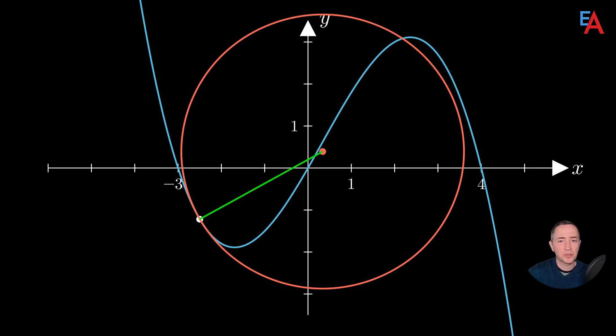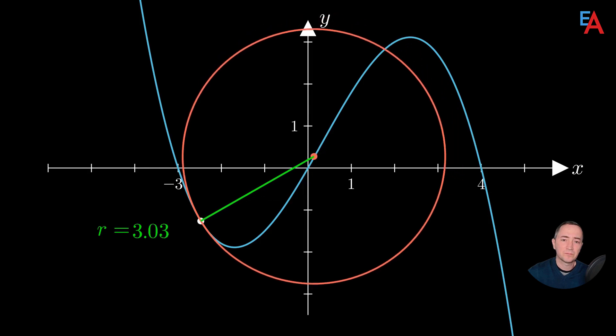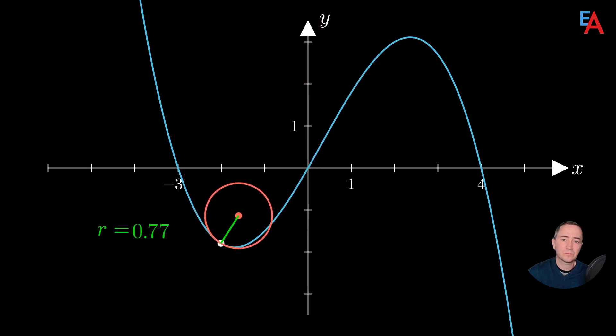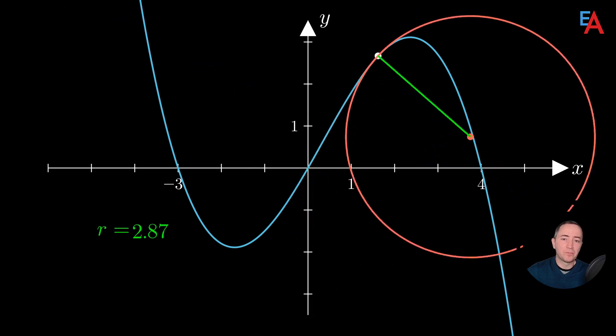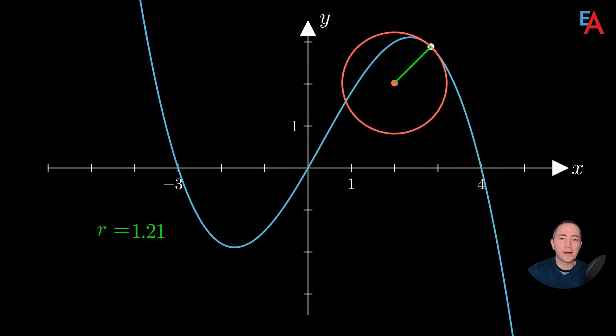To gain intuition, let's move our point to the right and see how the radius of this circle changes. Here we encounter a place where the curve flattens out, so the radius of the circle would have to be infinite. And then we go right.